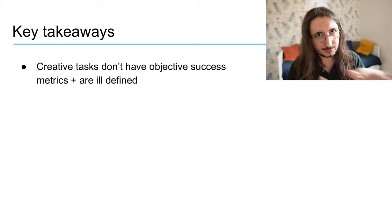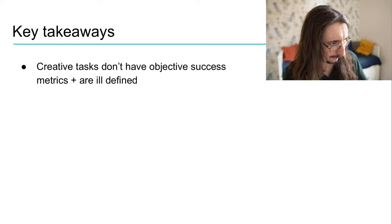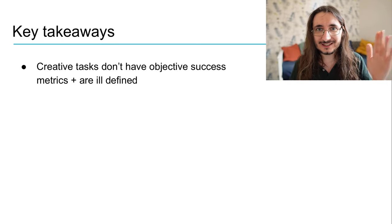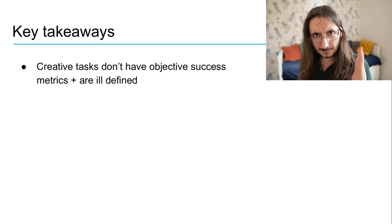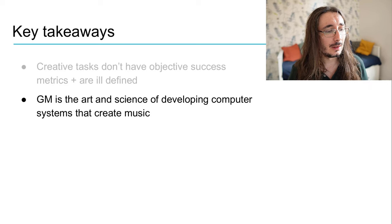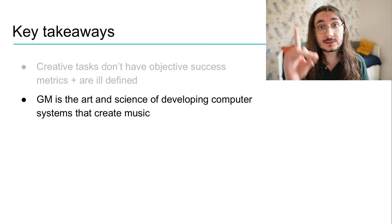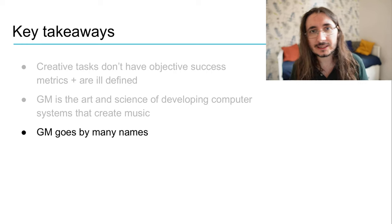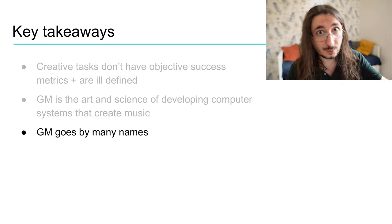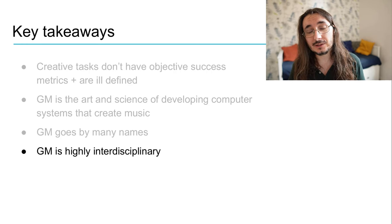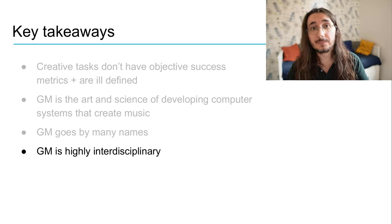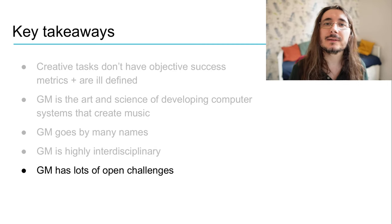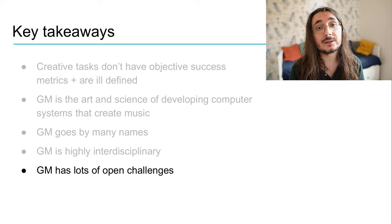Let's wrap up this video by mentioning the most important points. First, creative tasks, unlike intelligent tasks, don't have an objective success metric and are ill-defined. Generative music is the art and science of developing computer systems that create music with different degrees of autonomy. Generative music goes by many names like algorithmic composition, music metacreation, or procedural music. It is highly interdisciplinary — to create these models you have to know quite a lot about artificial intelligence, music theory, and music information retrieval. Finally, generative music still has a lot of open challenges.